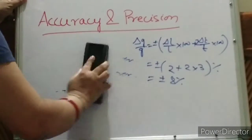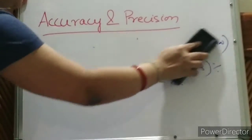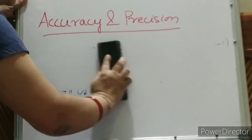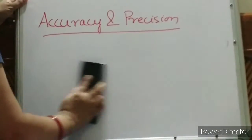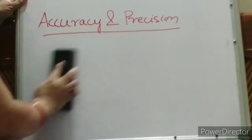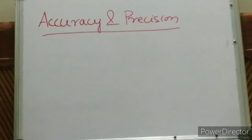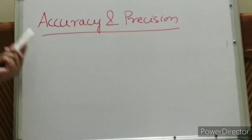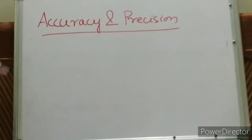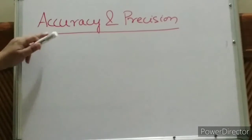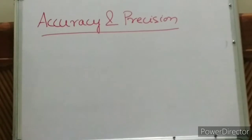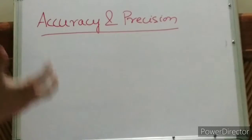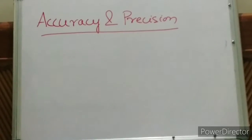Now let us discuss accuracy and precision — the most confused portion for students. What is accuracy? Accuracy means it is a measure of how close the measured value is to the true value of the quantity.